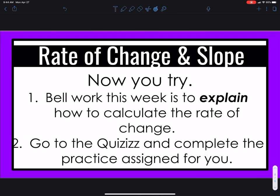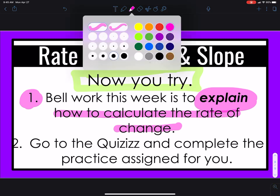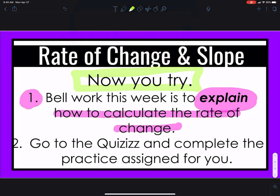That's it for the lesson. Now it's your turn to try. You have two tasks now. First, you're going to go to your bellwork for this week. And you're going to explain, because remember that was the objective. You're going to explain how to calculate the rate of change. Then the second thing you're going to do is you're going to go to quizzes. And you're going to complete the practice assigned for you. Let me know if you have any questions. I'm here to help. Talk to you soon.